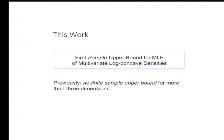This work gives the first finite sample upper bound for the maximum likelihood estimator of multivariate log-concave densities — densities on R to the D. Previously, for up to three dimensions, we knew the answer. For more than three dimensions, no finite sample upper bound was known. In particular, the bound that we prove is essentially tight up to a 1-over-epsilon factor.